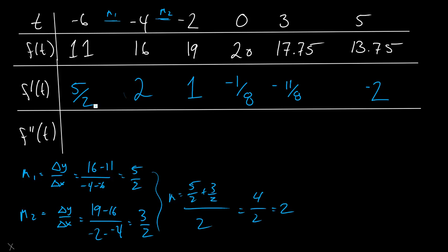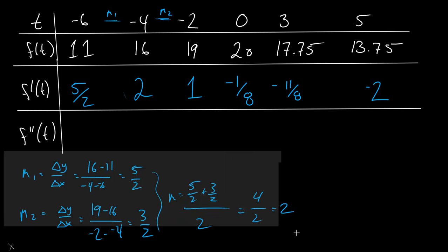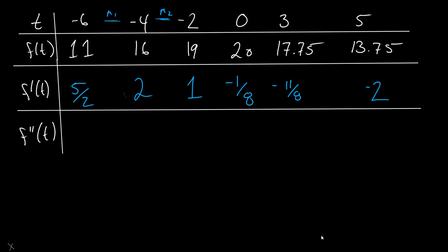That's how we get the first derivative: we use averages for the middle points, and for the end points we just use that single slope. Now, to get the second derivative, remember that the second derivative is actually just the slope of the first derivative. So you can forget that f of t exists at all — all we need to use to calculate the second derivative is the first derivative values, using the same technique.